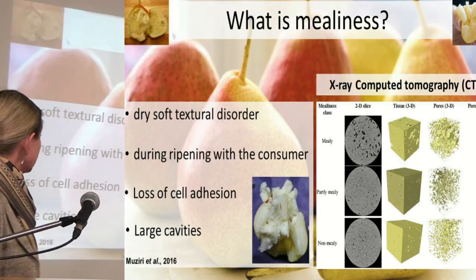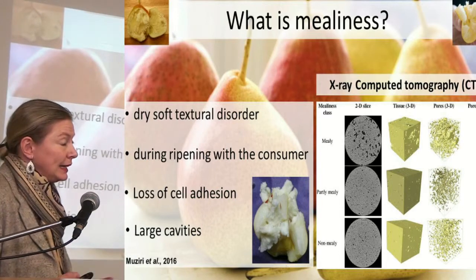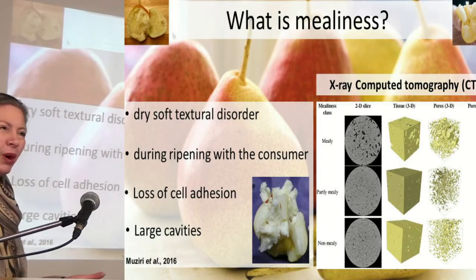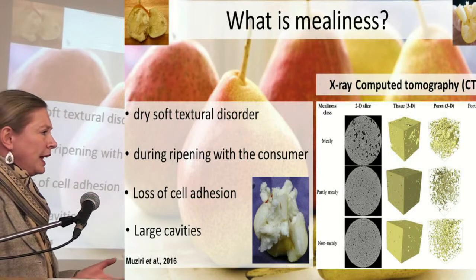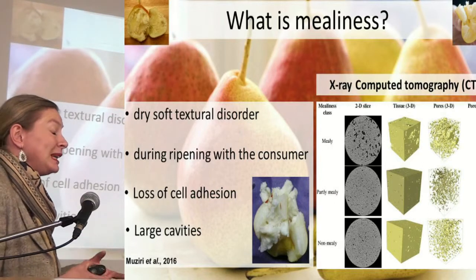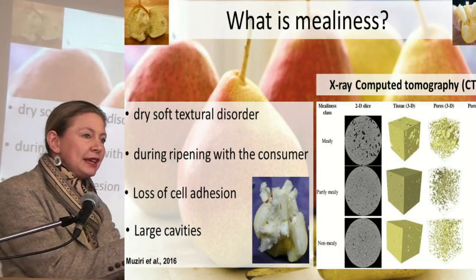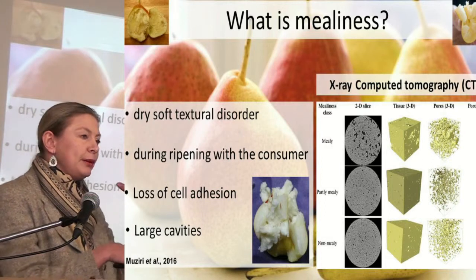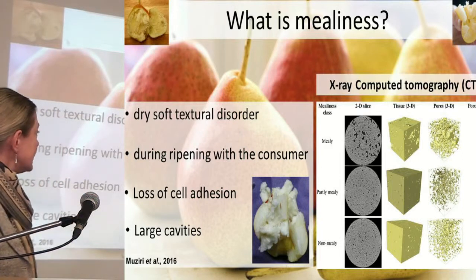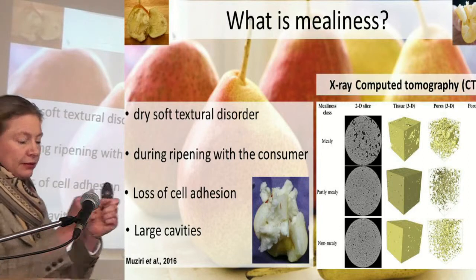So what is mealiness? Mealiness is a dry textural disorder which normally occurs with the consumer, so it's unfavorable, and in any consumer study mealiness is the most disliked thing. A lot of studies have been done on the why, and normally longer-term storage reduces it — the shorter the storage period, the more mealiness we get during ripening. Interestingly, there's a loss of cell adhesion, and that's why mealiness cells literally slide off each other, so you'd never bite through the cells to get juiciness. This has been confirmed with X-ray CT scans. We can see that in the mealy sample there are a lot more pore spaces and the cells have moved away from each other.